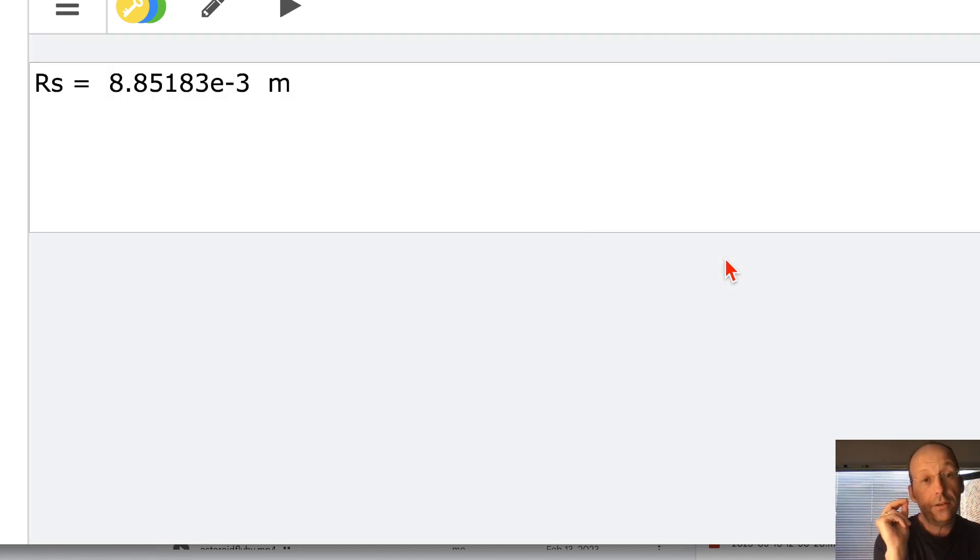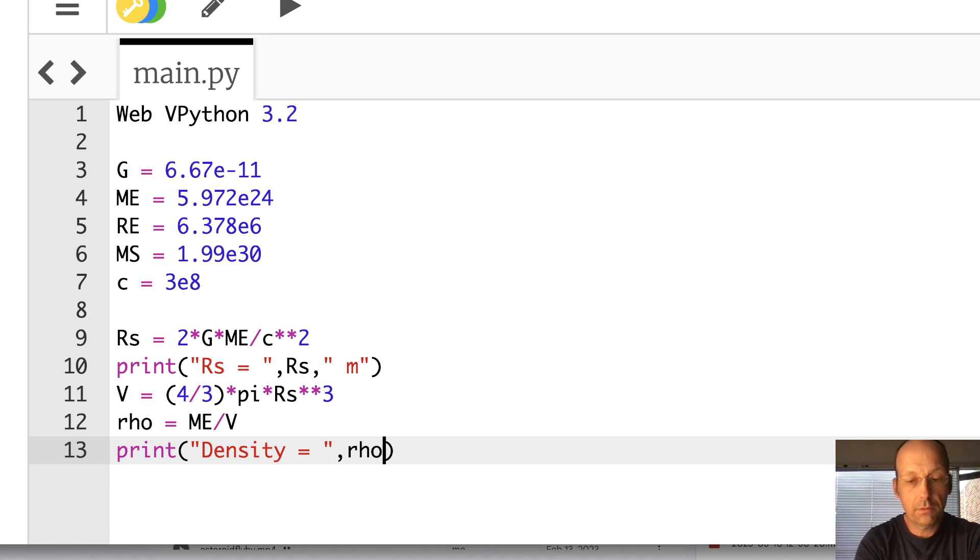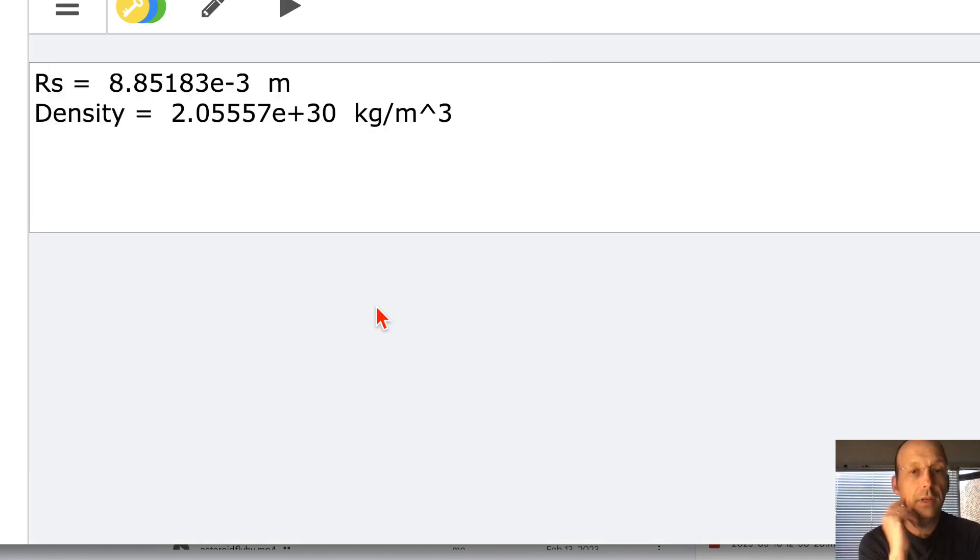Okay, so 8.8 millimeter radius. So you could fit it in your hand. That's how small it would have to be. Now let's calculate the density. That's the fun part. So the density. So let's calculate the volume. V equals 4 thirds times pi times R_s cubed. And then rho equals mass of Earth divided by V. Print density equals rho. And that's kilograms per cubic meter. It's going to be something ginormous. Yeah, 2 times 10 to the 30th kilograms. So it just doesn't even make sense. Doesn't even make sense.